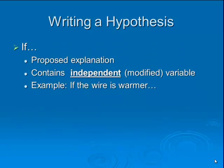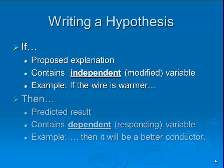Another way of writing a hypothesis is using a pattern which uses if-then statements. You would start off your hypothesis with the word 'if.' The words that follow are your proposed explanation, which normally contains the independent variable — sometimes called the modified variable — whatever you choose to modify in the experiment. For example, you might say 'if the wire is warmer' or 'if the temperature of the wire increases,' implying that temperature is the independent variable. After the 'if' statement, you make a 'then' statement.